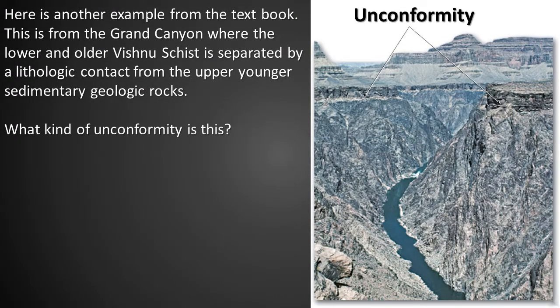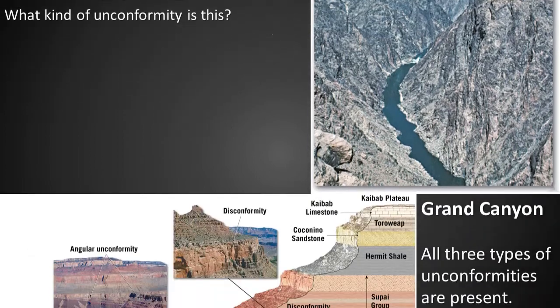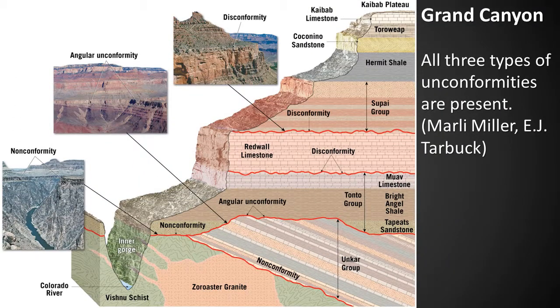Here's another example from the textbook. This is from the Grand Canyon where the lower and older Vishnu Schist is separated by a lithologic contact from the upper, younger sedimentary geologic rocks — this is a nonconformity. A figure from our textbook shows that all three types of unconformities are found in the Grand Canyon: a disconformity, an angular unconformity, and a nonconformity.